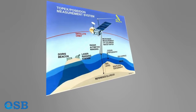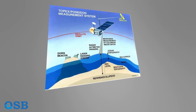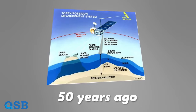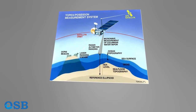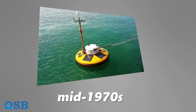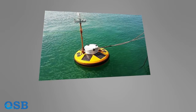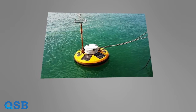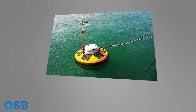Our first information about the waves of the Caspian Sea dates back to about 50 years ago. The first direct measurement data of waves in the Caspian Sea dates back to the mid-1970s. After that, our understanding of Caspian waves has improved with the advancement of technology.